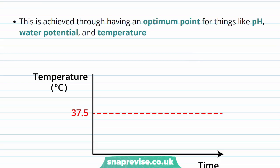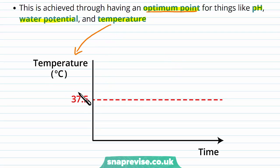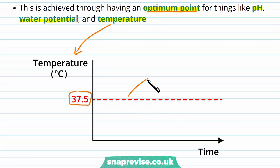So how do we control these to be a constant value? It's done through having an optimum point for things like pH, water potential, and temperature. The optimum point refers to the point at which these things are at their best value. For example, body temperature is around 37.5 degrees Celsius and we have to keep it around this value so that all proteins and processes work as efficiently as possible. We also have an optimum pH and an optimum water potential.